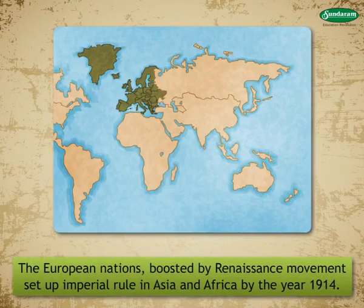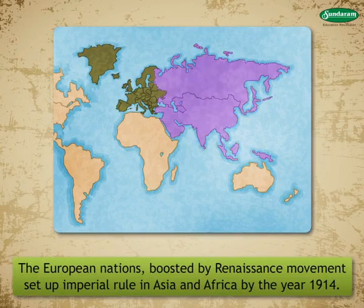The European nations, boosted by the Renaissance movement, set up imperial rule in Asia and Africa by the year 1914.